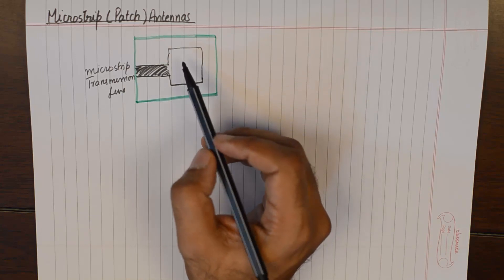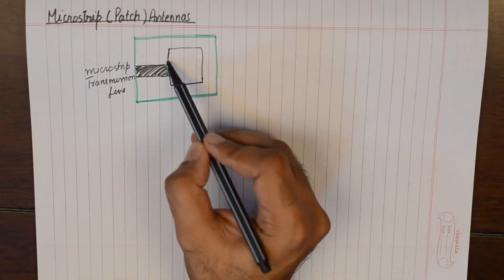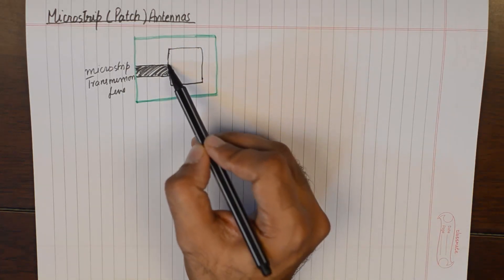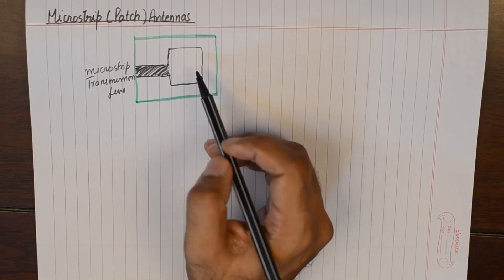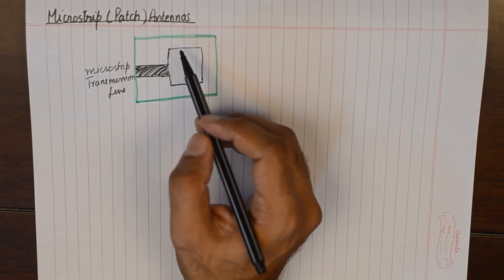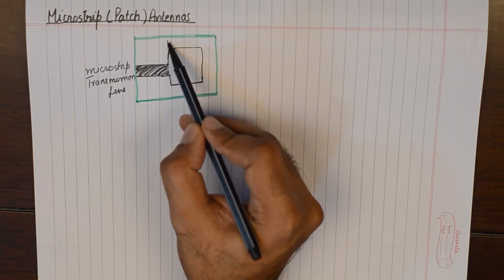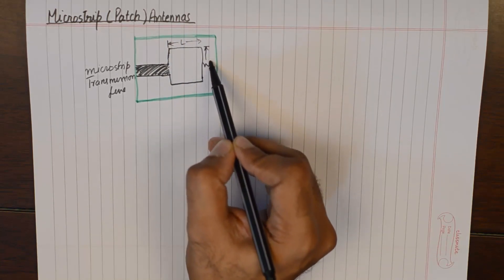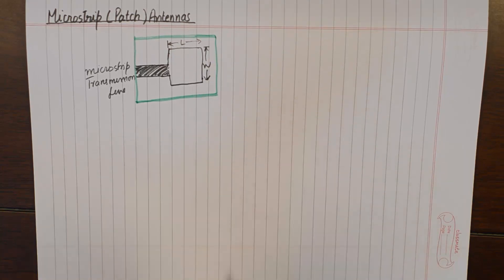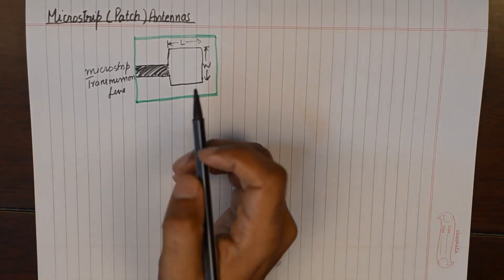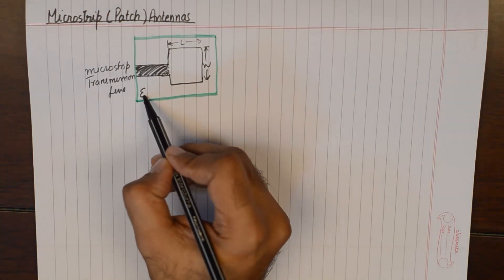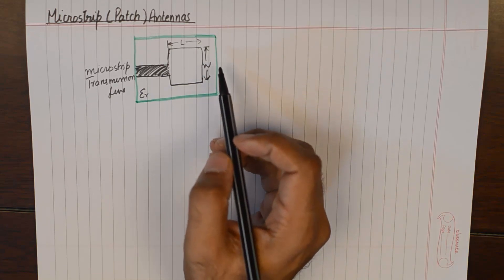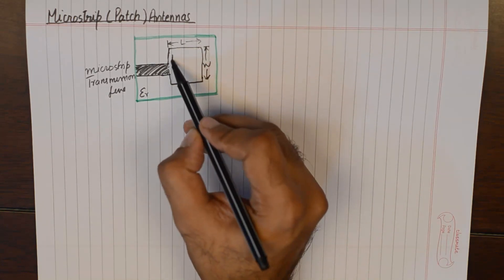This rectangular deposit on top of the substrate of dimension L and W would constitute the microstrip antenna itself.